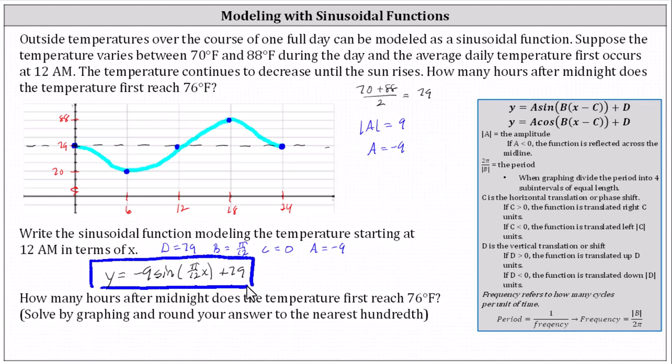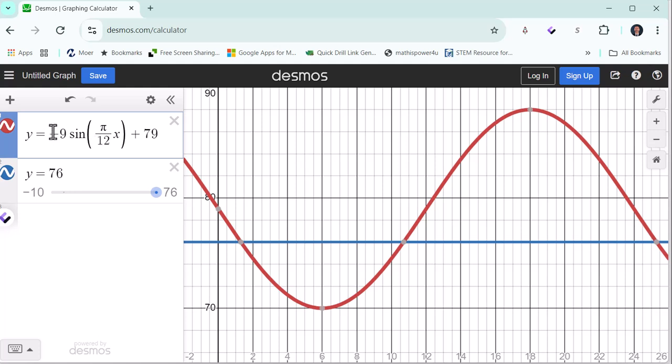And for the second question, how many hours after midnight does the temperature first reach 76 degrees Fahrenheit? We're told to solve by graphing and round to the nearest hundredth of an hour. I've already set this up using Desmos. I've entered the equation in cell one. In cell two I entered y equals 76.